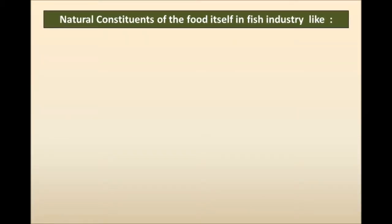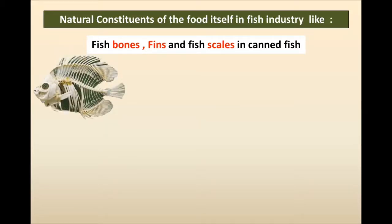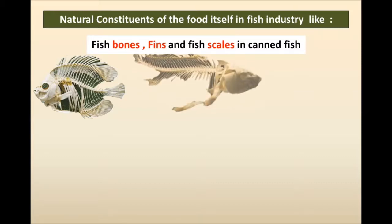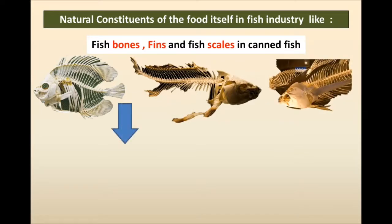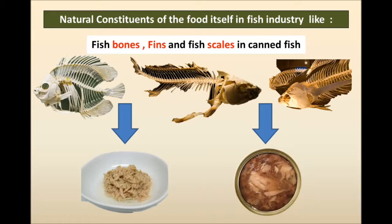In the fish industry, physical hazards include bones, fins, scales, and eyes. There are complaints found online, with pictures showing fish eyes found in canned tuna. Fish bones and scales may also accidentally be found while eating processed or canned fish such as tuna. It is not acceptable to find any bones, fins, or scales — these are physical hazards that are naturally constituents of the food itself.